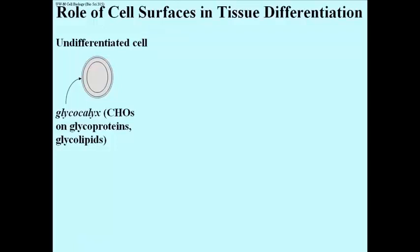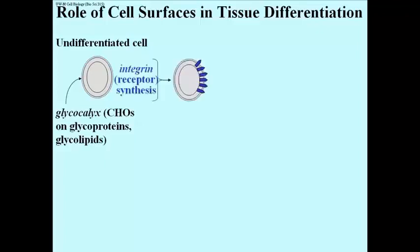Here is an undifferentiated cell — think of it as an early embryonic cell. Illustrated is the glycocalyx as a sort of fuzzy coating of the cell. These are glycoproteins, also glycolipids, and what makes it a glycocalyx are the carbohydrates that are covalently linked to the proteins embedded in the membrane.